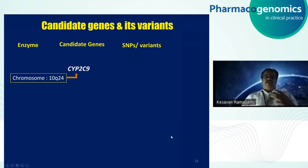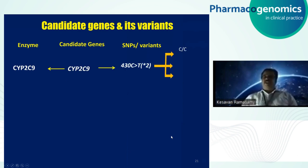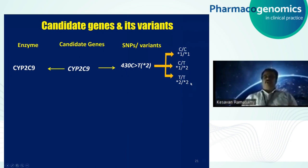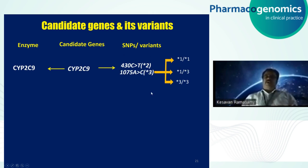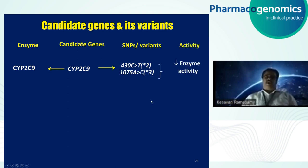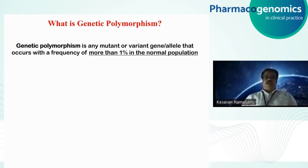Our candidate gene identified here is the CYP2C9 gene, which codes for the enzyme. The two variants of interest are star 2 and star 3. These are the possible genotypes one may carry. Those carrying star 2 or star 3 variant alleles, as mentioned, have decreased enzymatic activity.